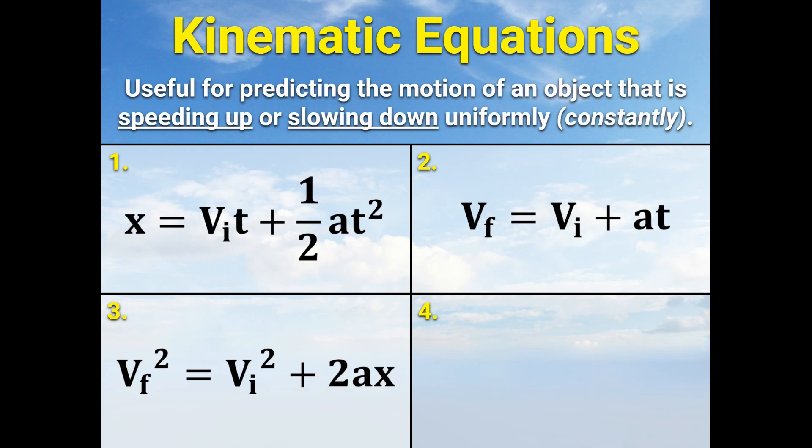And finally, the fourth kinematic equation, the one you'll probably use the least frequently, is this one. So, x equals Vi plus Vf divided by 2 multiplied by t, or displacement equals initial velocity plus final velocity divided by 2 multiplied by time.